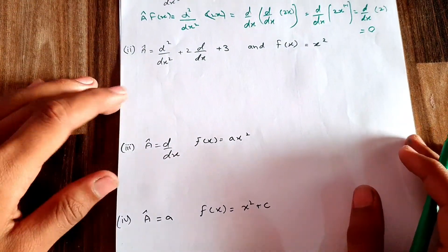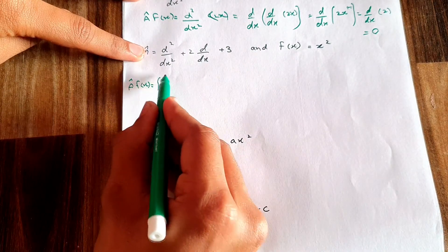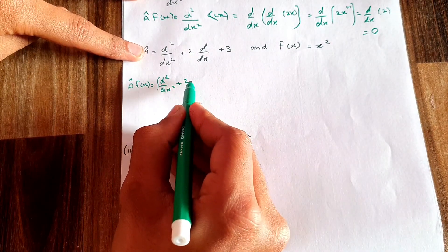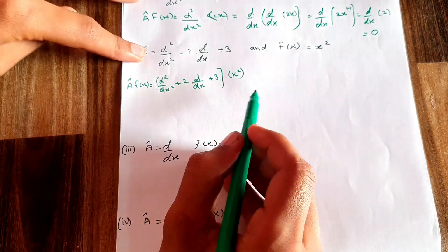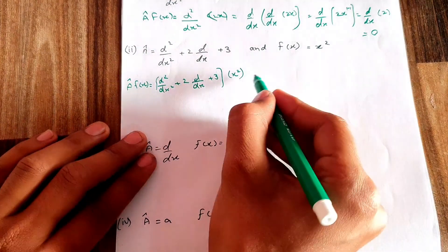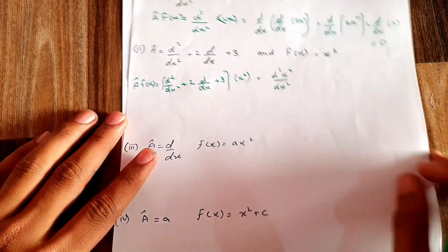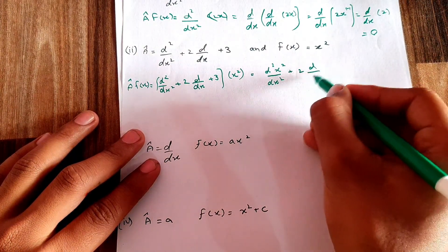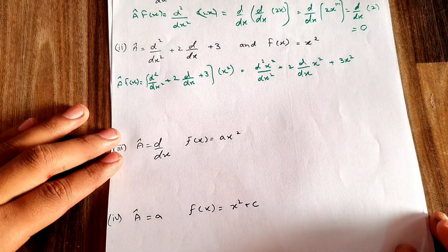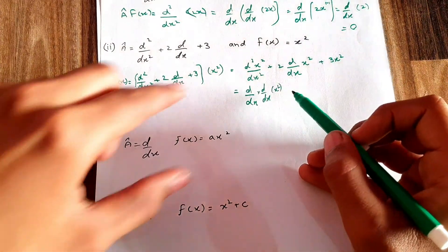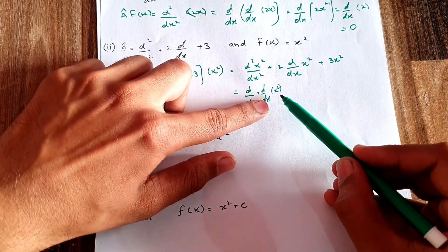Next, apply the operator (d²/dx² + 2·d/dx + 3) on the function x². Distributing, the answer equals: d²(x²)/dx² + 2·d(x²)/dx + 3x². This is how the function x² is multiplied through all terms of the operator.